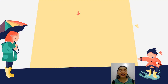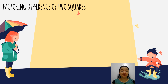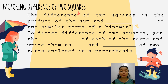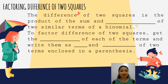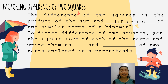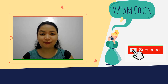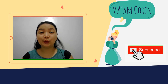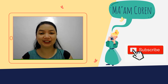Let us sum up what you have learned. In factoring the difference of two squares, it is the product of the sum and difference of two similar terms of a binomial. To factor, get the square root of each term and write them as sum and difference of two terms enclosed in parentheses. I hope you learned the lesson for today. I am Mam Karin, your teacher. Have a good day.